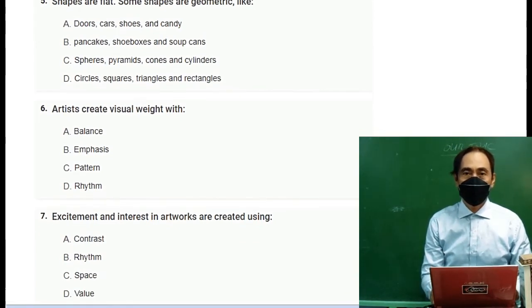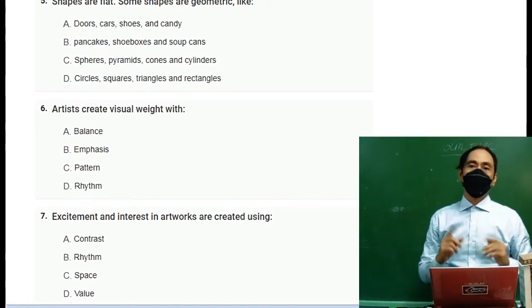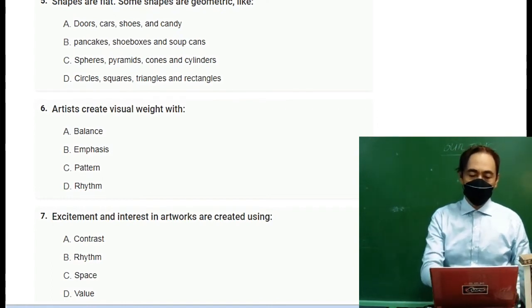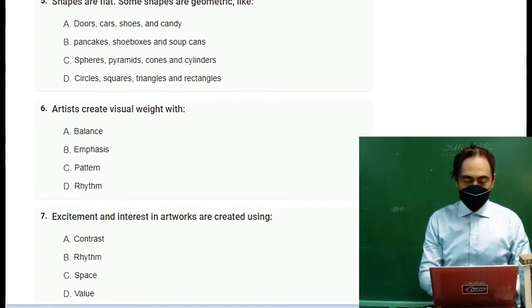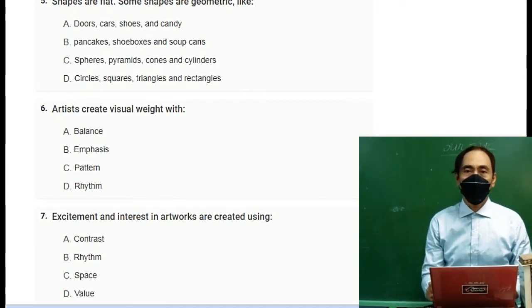Number five: Shapes are flat. Some shapes are geometric like A. doors, cars, use, and candy, B. pancakes, shoe boxes, and soup, C. spheres, pyramid, cone, cylinders, D. circles, squares, triangles, and rectangles.